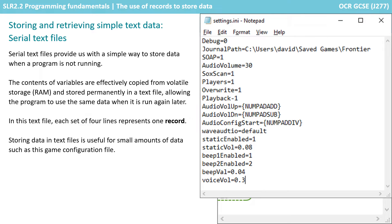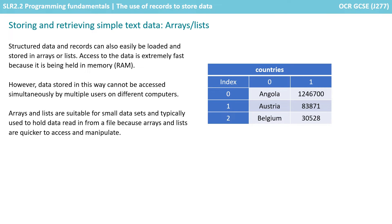Simple text files stored in this way are useful for low volumes of data, such as a game configuration file. Structured data and records held in simple text files can also easily be loaded and stored into arrays or lists. Access to this data is extremely fast once it's been loaded from the text file to an array or list in memory.